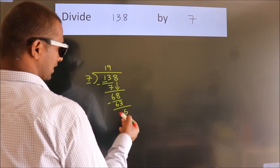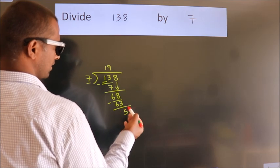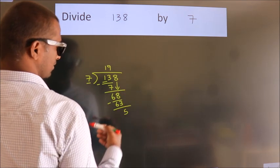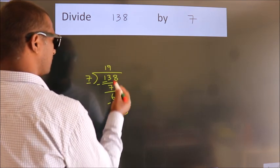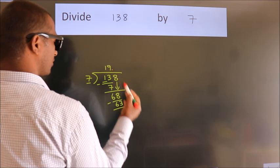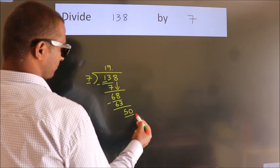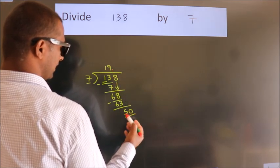After this, there are no more numbers to bring down. So what we do is put a dot and take 0, giving us 50.